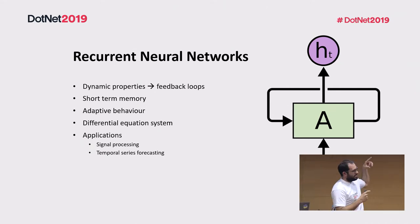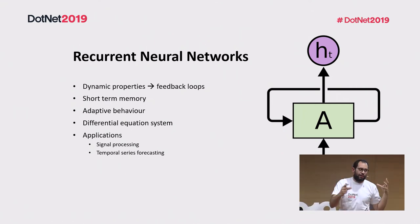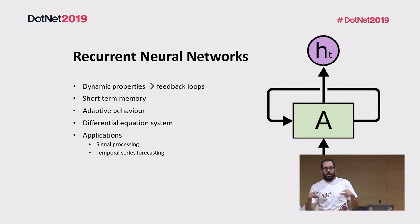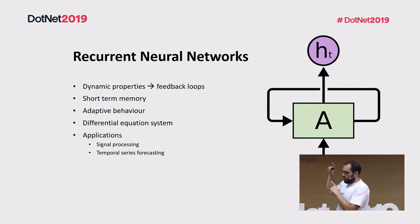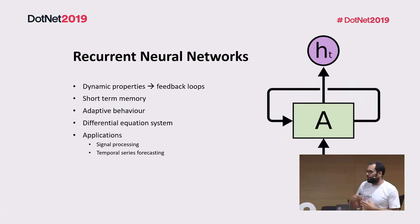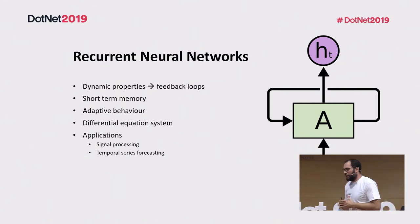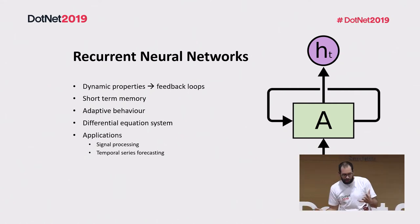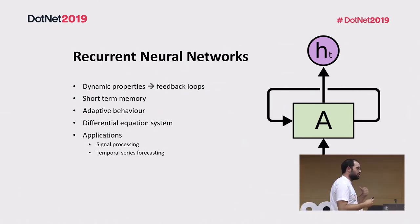So what is a recurrent neural network? You have a feedback loop that is going to take information and represent a kind of state inside the network. You can represent it with differential equations — it's kind of very complex. These networks were conceived for tasks like signal processing or forecasting, but we wanted to apply them for natural language processing. How can we process a sequence of words inside that?